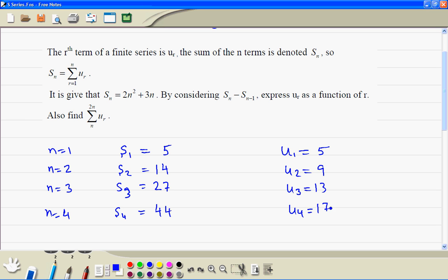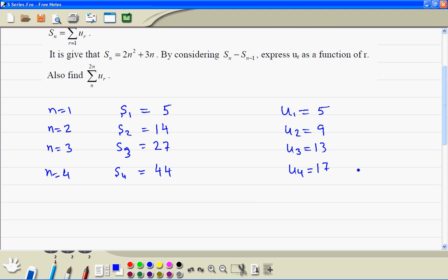Now we can see the pattern. So basically we've got multiples of 4 plus 1. So therefore, the formula for the rth term, ur, is 4r plus 1.